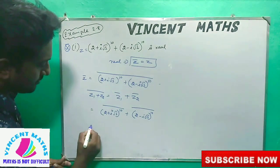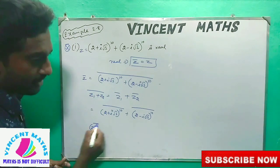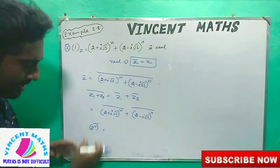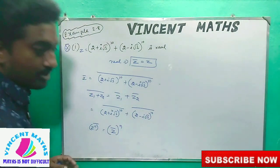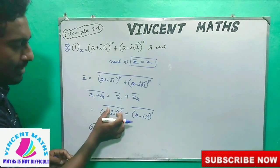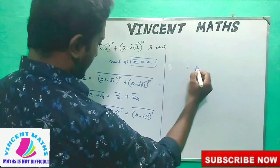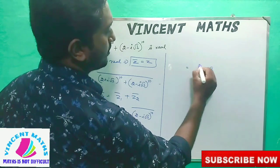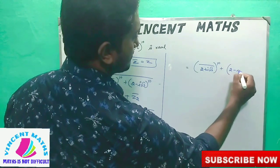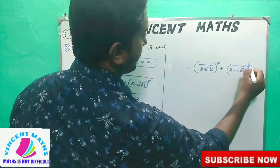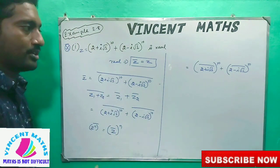What does property mean? That is: Z power n, whole bar, equals Z-bar power n. You can use the property — that is 2 plus i root 3, power 10, equals 2 minus i root 3, power 10, bar. Okay friends.